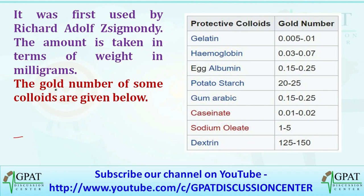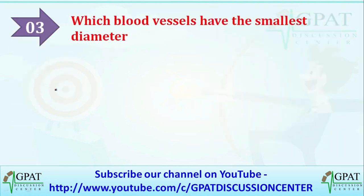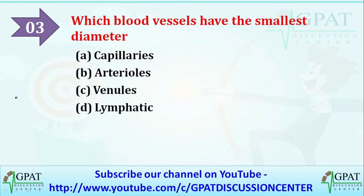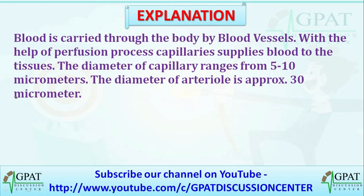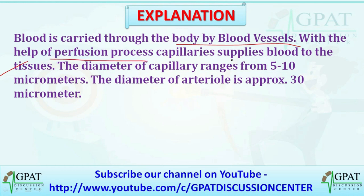The next question is: which blood vessels have the smallest diameter? Options are capillaries, arterioles, venules, or lymphatic. The answer is capillaries. Blood is carried through the body by blood vessels via the perfusion process. Capillaries supply blood to the tissues, and the diameter of a capillary ranges from 5 to 10 micrometers, while the diameter of an arteriole is approximately 30 micrometers.